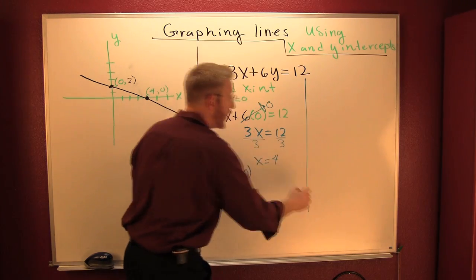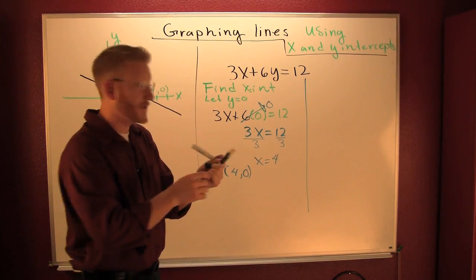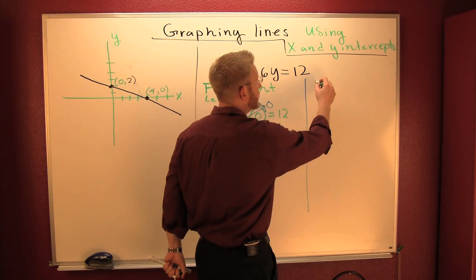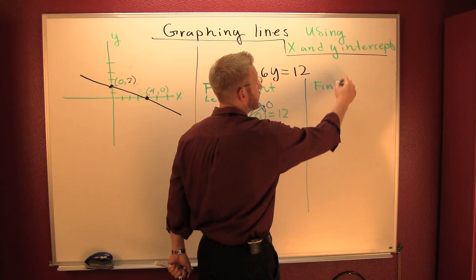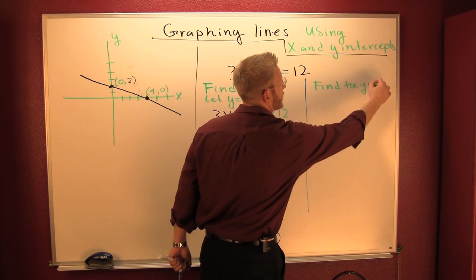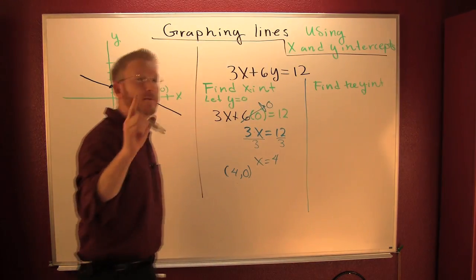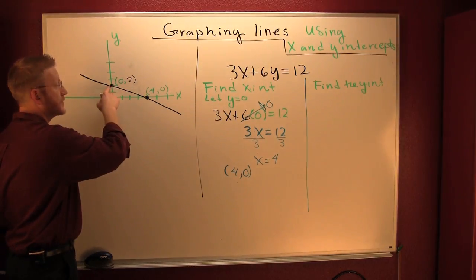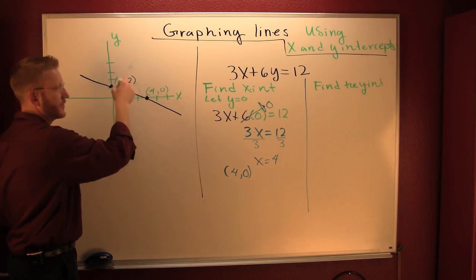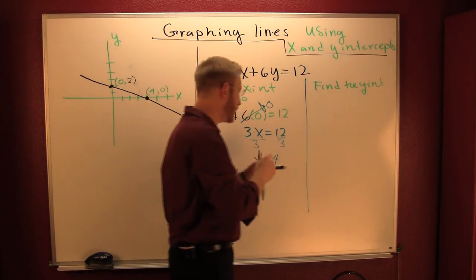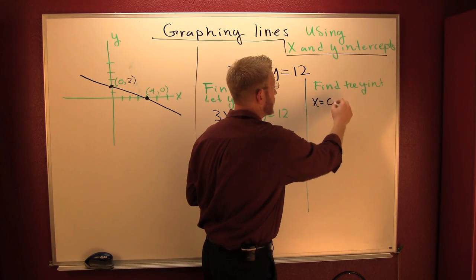Let me find my y intercept. My y intercept. To find the y intercept, here what I'm going to do is I'm going to let x equal 0 and solve for y. So I do that. x is equal to 0.